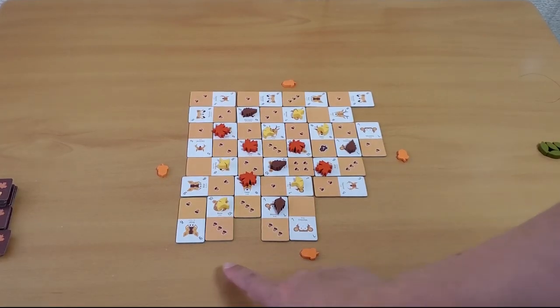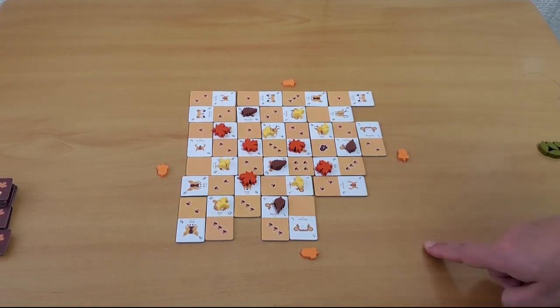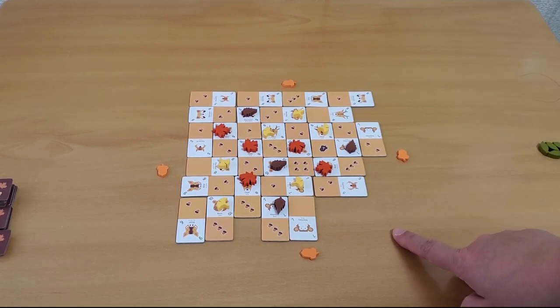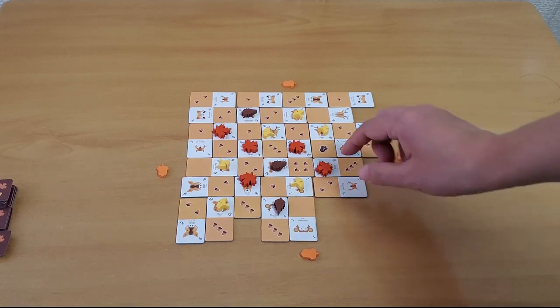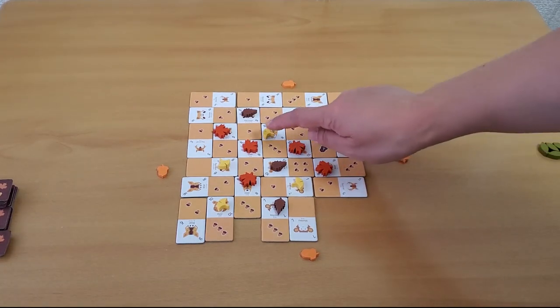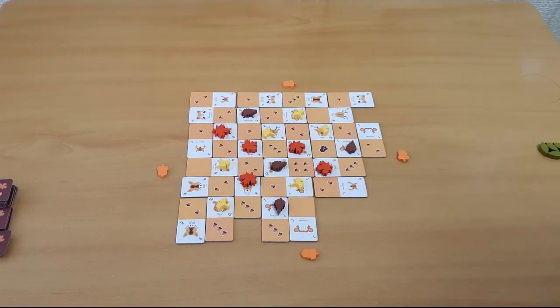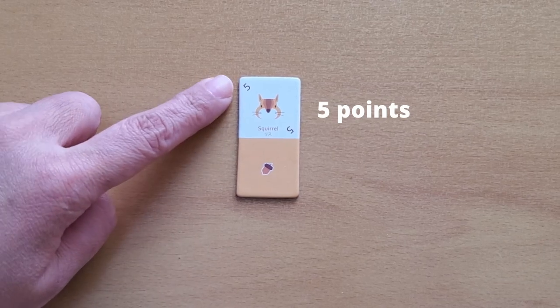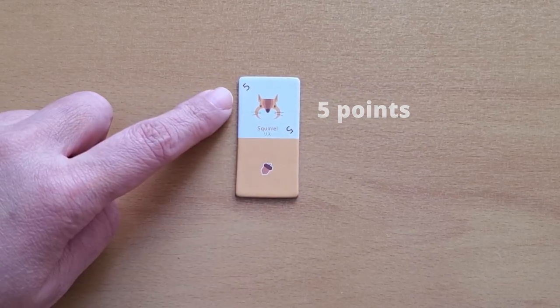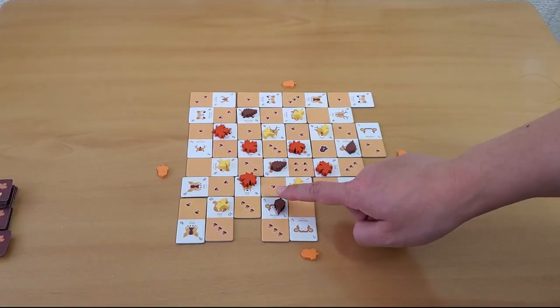Scoring. Once all players are unable to place any more tiles, the game ends. Each player adds up the number indicated on the animal tiles with their leaf token, and the player who has the high score is the winner.